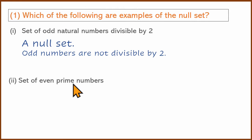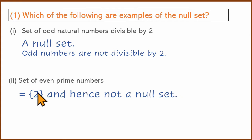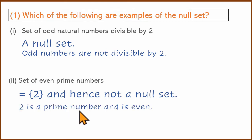Second one: Set of even prime numbers. Even prime numbers — the prime numbers are 2, 3, 5... In this set, the only prime number which is also even is 2. So 2 is the even prime number. All other elements — this is not a null set.